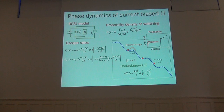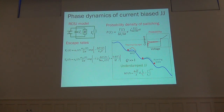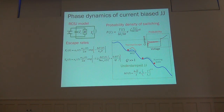When we increase the bias current we increase the tilt of the washboard potential and at the same time reduce the height of the potential barrier. Thermal fluctuations may then induce the escape of the phase particle, or quantum tunneling across the potential barrier. After the escape event, we have the transition to the running state — the finite voltage state — if the damping is quite low, i.e., if the junction is in the underdamped regime with the quality factor Q much larger than one. Therefore, the switching from the superconducting state to the resistive state is a stochastic phenomenon, and measurements of switching current distributions provide the tool to investigate the phase dynamics.